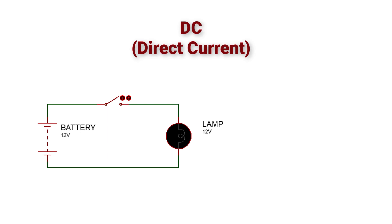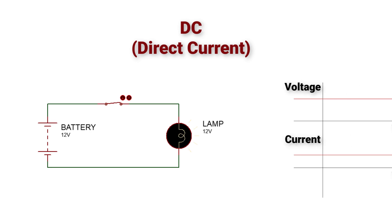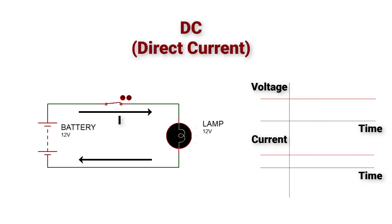As you can see here, we will connect a DC voltage source or a battery to a lamp, then turn on the switch. Here, the current will start to flow through the circuit in one direction, and it will keep cycling.